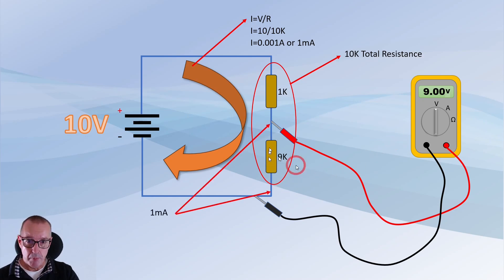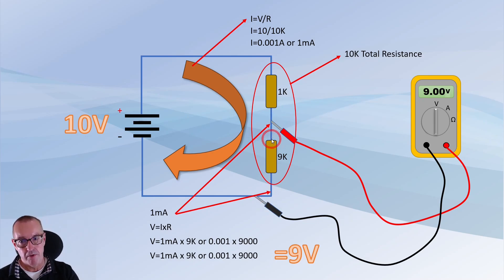And then just applying Ohm's law again across that resistor. If we've got 1 milliamp across a 9k resistor that means you must have 9 volts across it. So hence when I measure there I get 9 volts. Okay so it's basic Ohm's law.